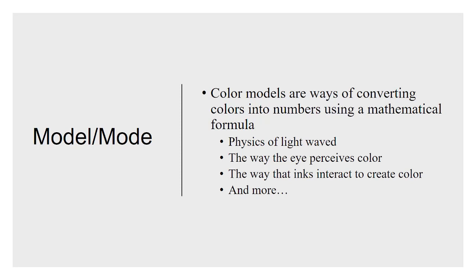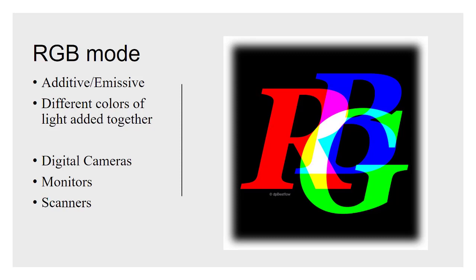We're going to focus on two of those modes. First off is RGB — an additive or emissive color system based on systems that emit light. As you add different wavelengths of light together, they all combine to make white. As you add equal parts red, green, and blue, you get white. In the situation with a digital camera or scanner, that's recording light, so it's still additive color even though it's not necessarily emitting color.